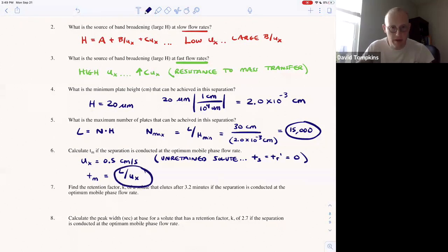So that's why you can just divide the length by the rate and it will tell you the time. So 30 centimeters divided by half a centimeter per second gives 60 seconds, right, or one minute for the mobile phase to elute.